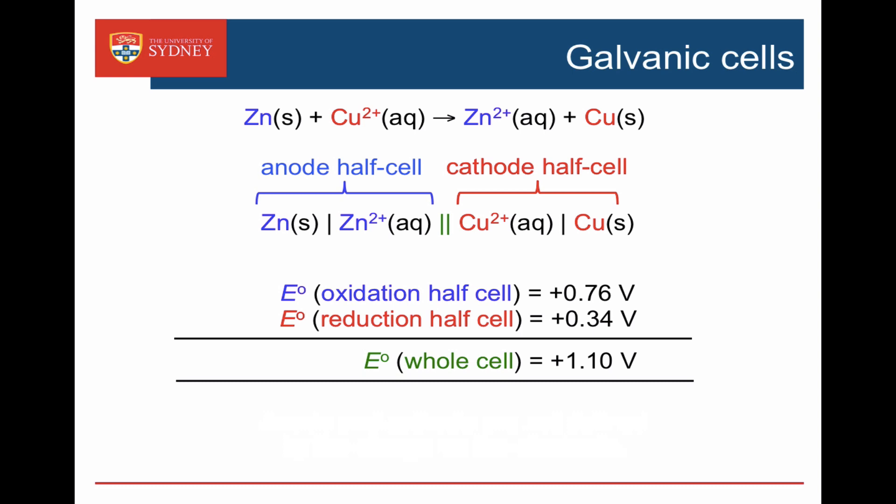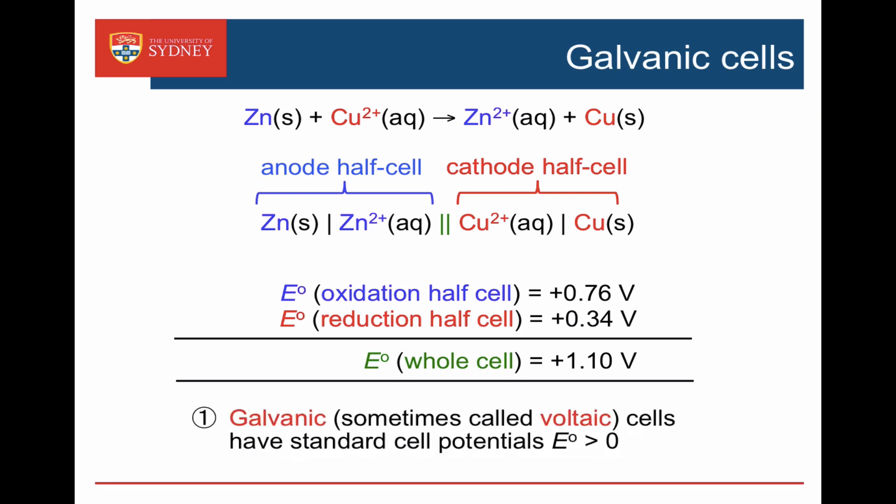Here's the galvanic cell that we used in the cell potentials video. Zinc metal is reacting with copper ions to make zinc ions plus copper metal. So the oxidation is happening at the anode — the zinc metal is going to zinc 2+ — and the reduction is happening at the cathode, where the copper ions are going to copper. We add the two half-cell potentials for the oxidation and reduction to give us our positive standard cell potential for the whole cell. It's a galvanic cell — cell potential is positive.